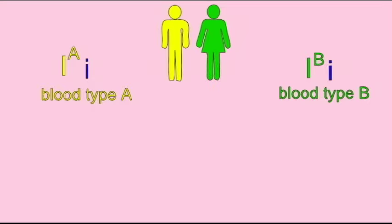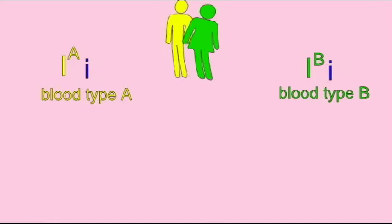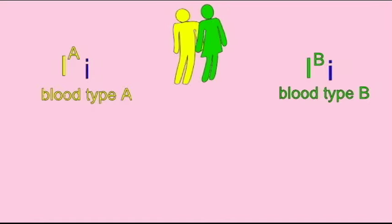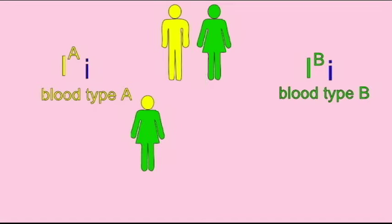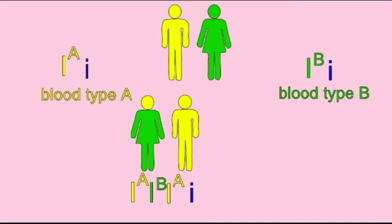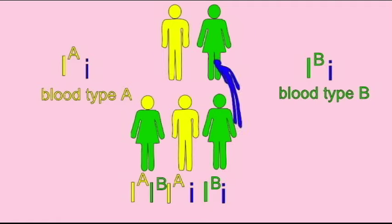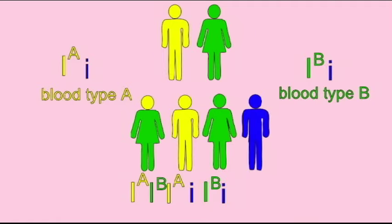If one parent was heterozygous for blood type A and a second parent heterozygous for blood type B, they could give their dominant alleles to a child who would then be AB, receiving an A allele from one parent and a B from the second. Some of their children could be A, some could be B, and some could receive recessive alleles from each parent and be blood type O.